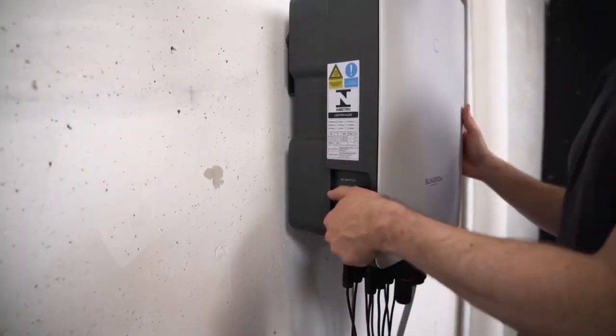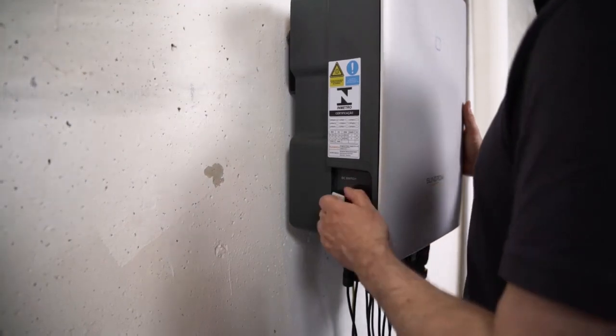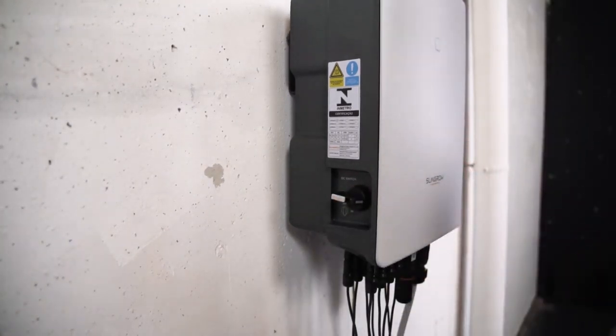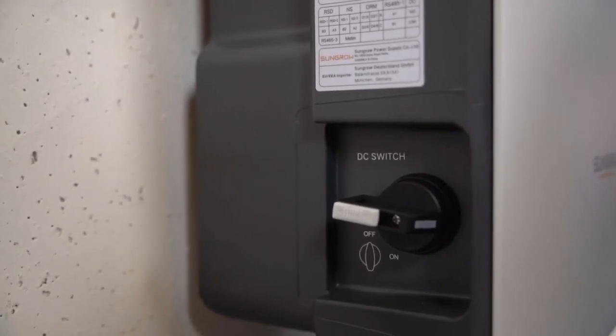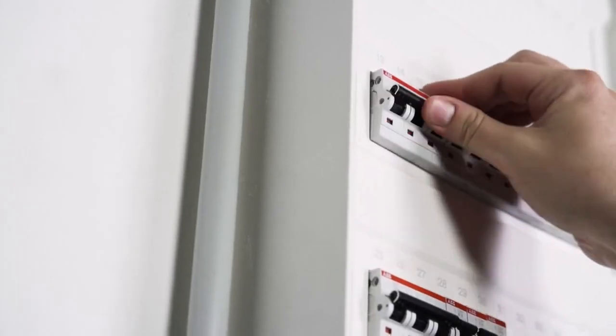Now it's time for commissioning. First, you have to set the DC switch of the inverter to the on position to connect the inverter to the PV generator. Next, you have to switch on the AC circuit breaker. A look at the LED light tells you if everything works properly. If the light shines continuously blue, the inverter is ready for use. If this is not the case, please refer to the manual where you will find a breakdown of the different light signals.